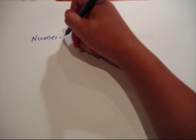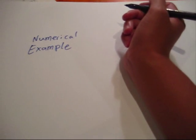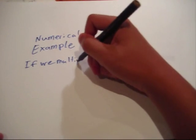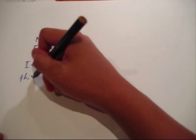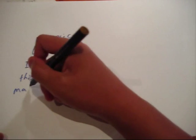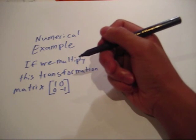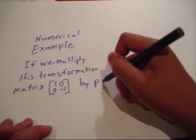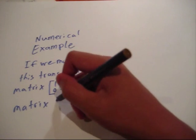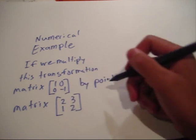Now, let's try a numerical example. If we multiply this transformation matrix 1, 0, 0, minus 1 by the point matrix, let's say 2, 3, 1, 2.